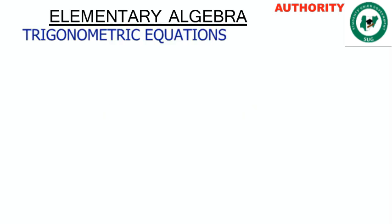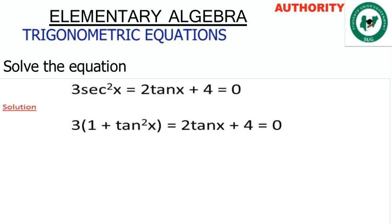Alright, let's take the last question for this trigonometric equation. The question says: solve the equation 3sec²x minus 2tanx plus 4 equals 0.